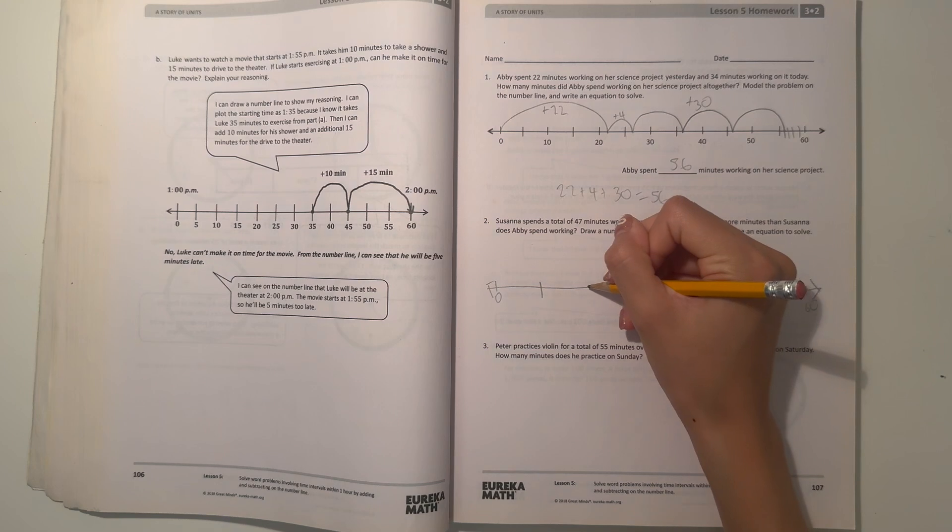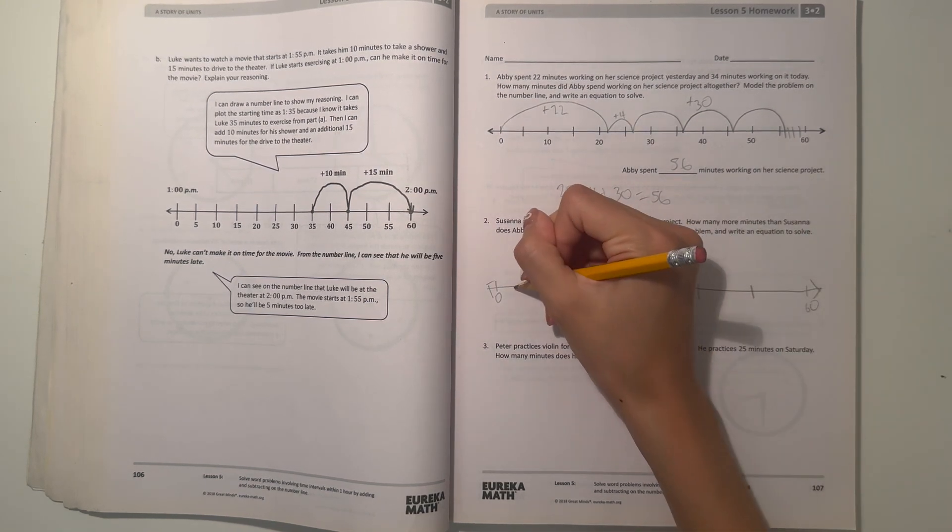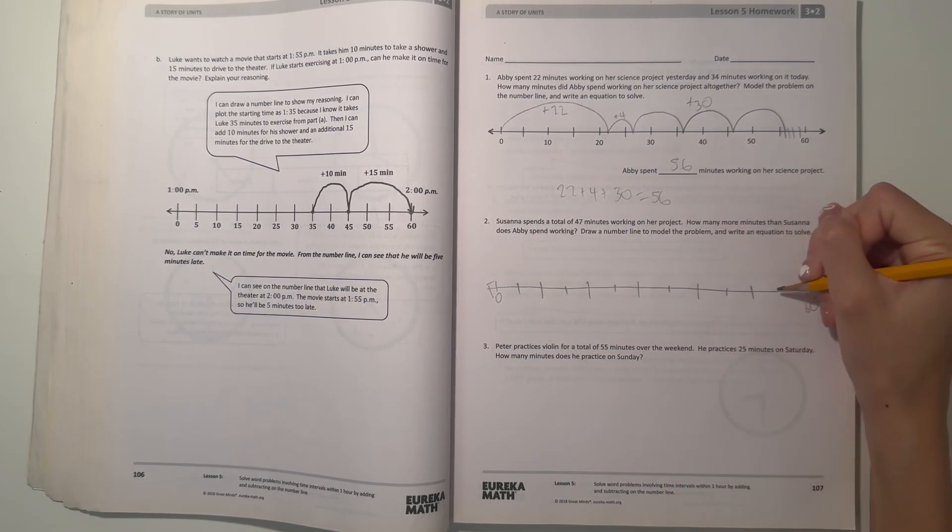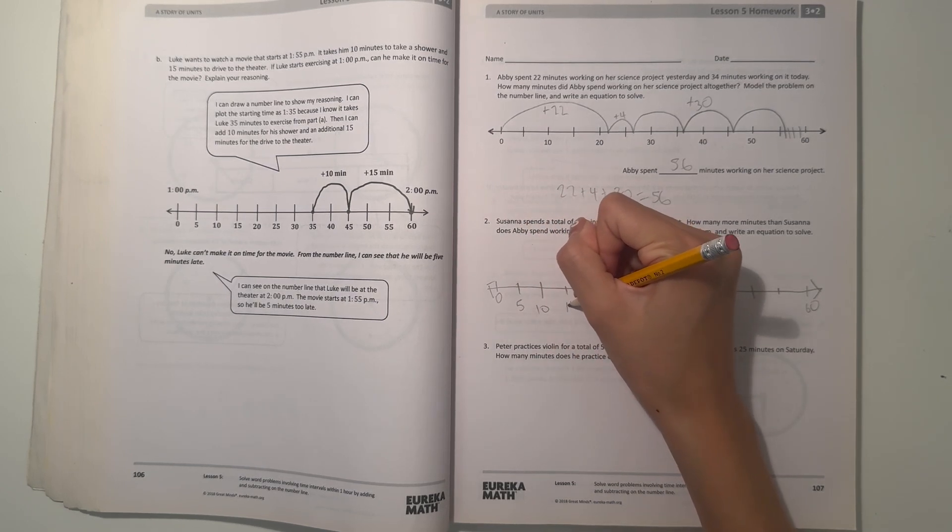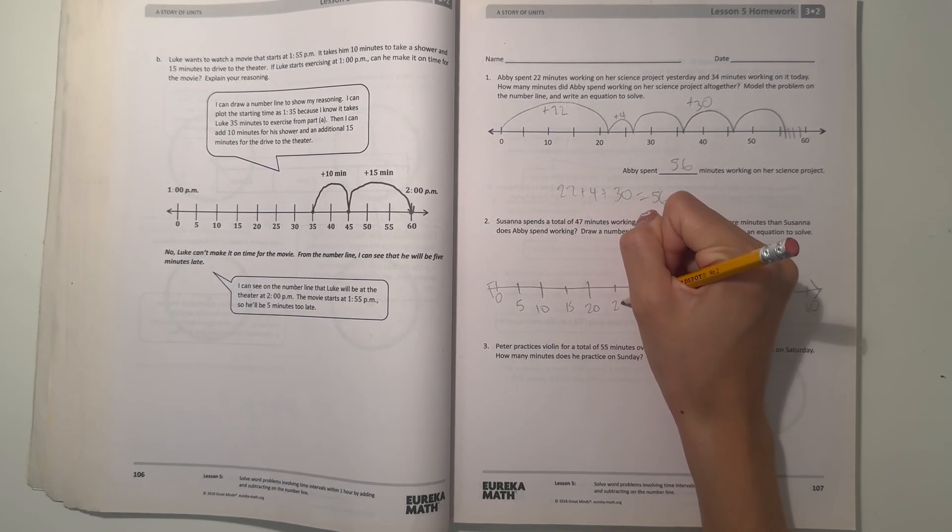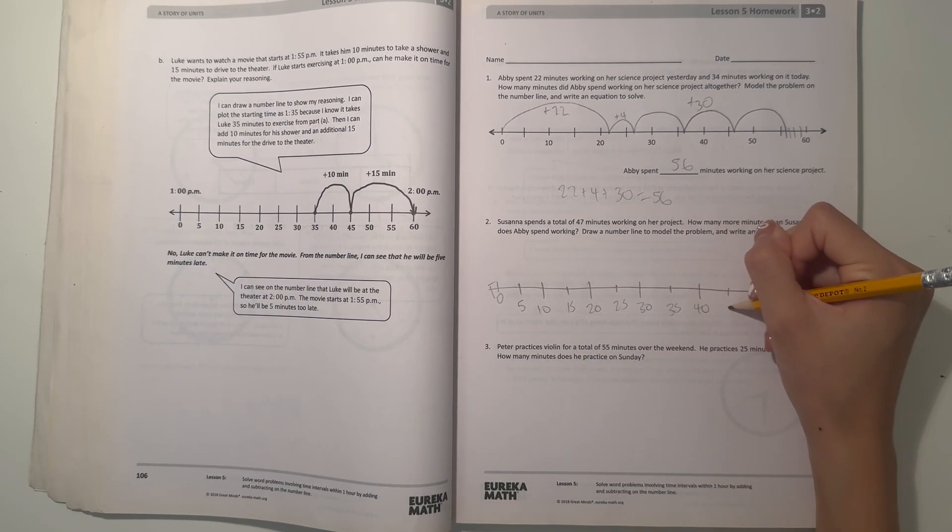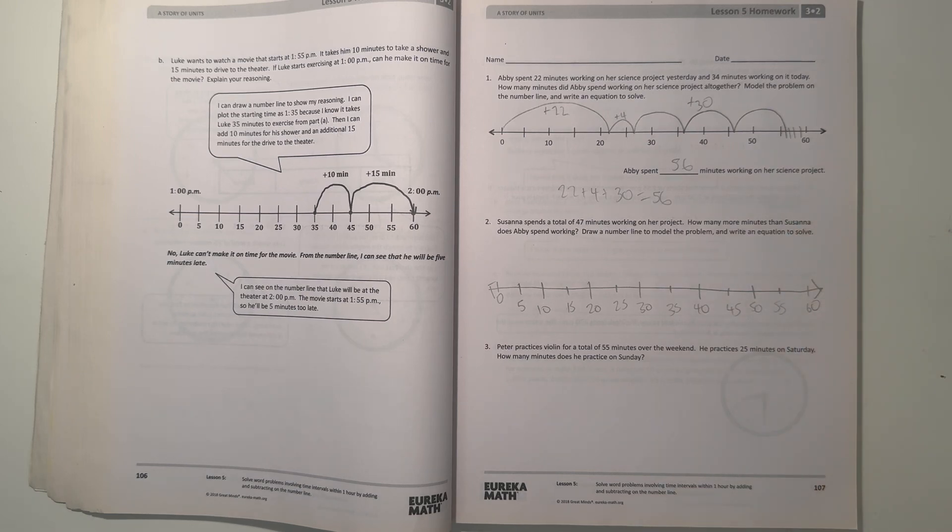0, 10, 20, 30, 40, 50. I can draw little tick marks in between. Let's label it 0, 5, 10, 15, 20, 25, 30, 35, 40, 45, 50, 55, 60. So let's see, Susanna spends 47 minutes, but Abby spends 56.